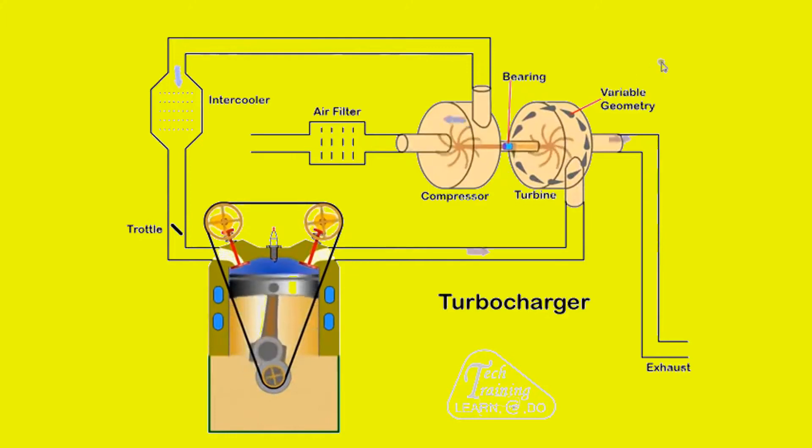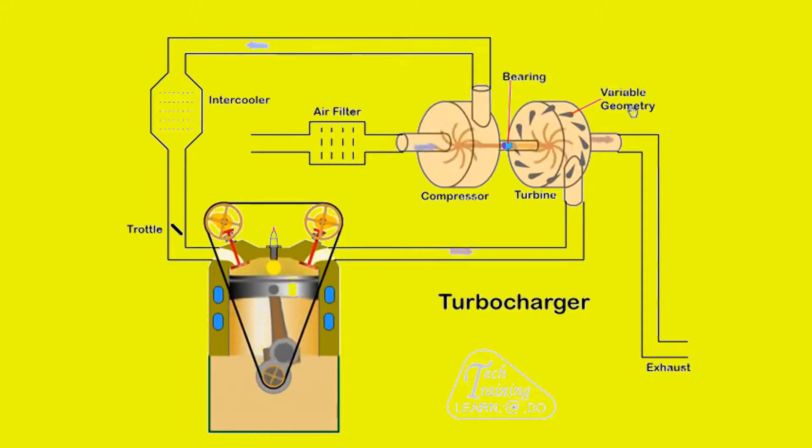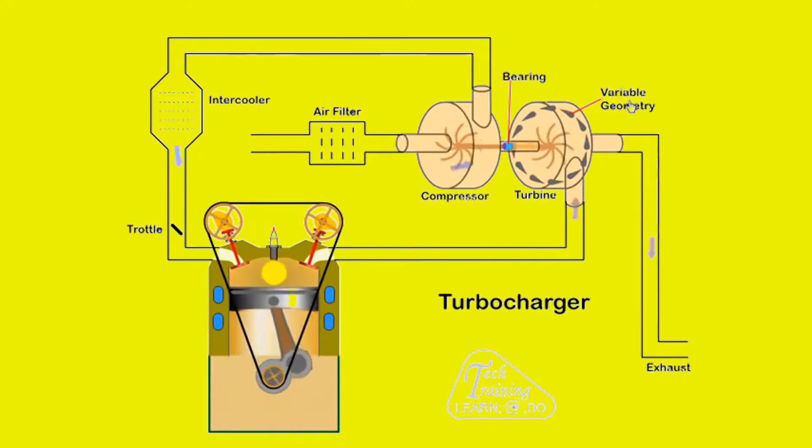As we require constant boost pressure from the turbo it is common to use a variable geometry turbine. At low gas flow the vanes are in the closed position. As the gas moves through the small gap between the vanes its velocity increases thus increasing the turbine speed. At high exhaust gas flow the vanes are open thus reducing gas velocity. At low speeds the vanes are again closed.